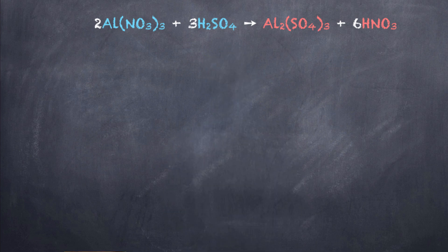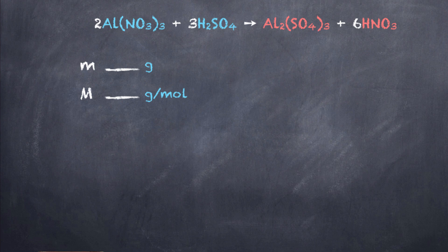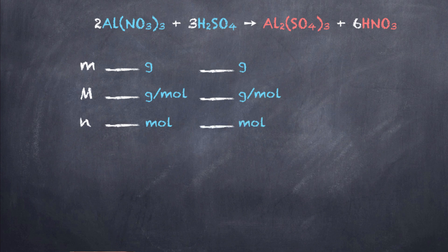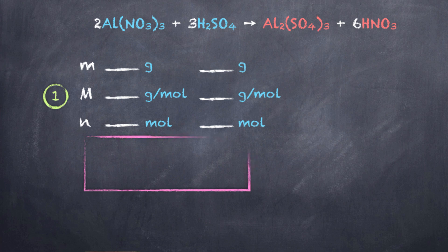So the game plan for these problems is really no different than standard stoichiometric problems. We're going to be given a mass of our reactant, use the molar mass of the formula — and it's important to note that we do not use the coefficients to figure out molar mass — and that allows us to figure out the number of moles of our reactant. We can now calculate the number of moles of both reactants, and that's our first calculation. This is where it differs from previous stoichiometric calculations — here we have to first establish which reactant is limiting, that is which one is going to dictate how much product is produced.